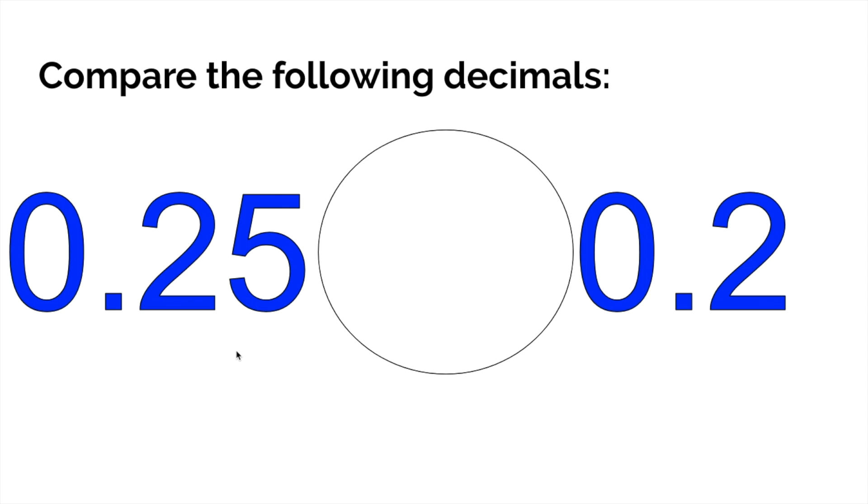In this situation, all you want to do is take it place by place. For example, the ones place—they both have a zero so they're still the same. The tenths place—they both have a two in the tenths place. Okay, still the same. Now here we have a five in the hundredths place and we have nothing in the hundredths place in this number.